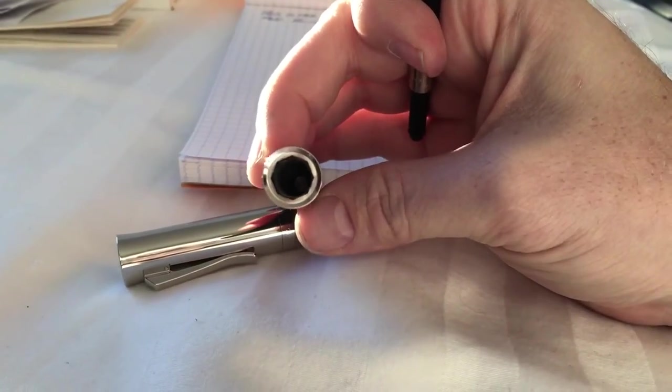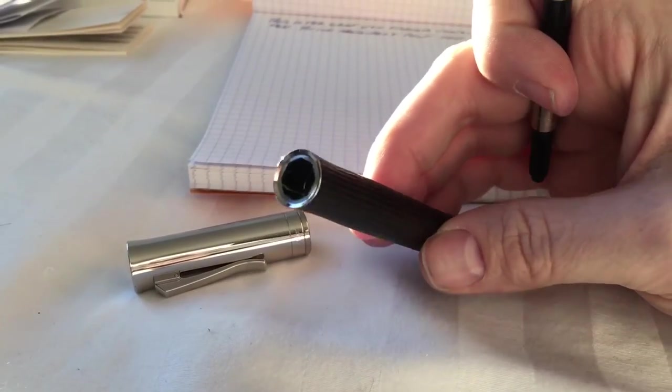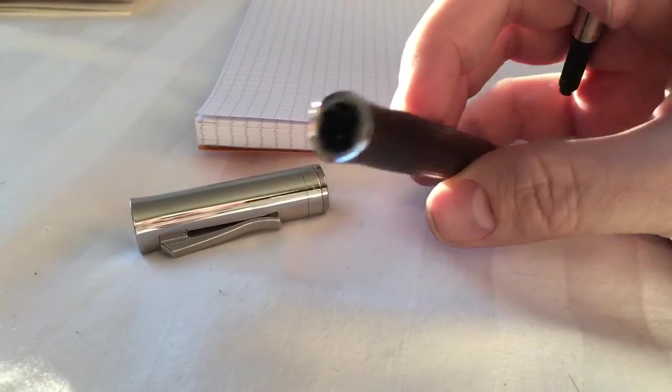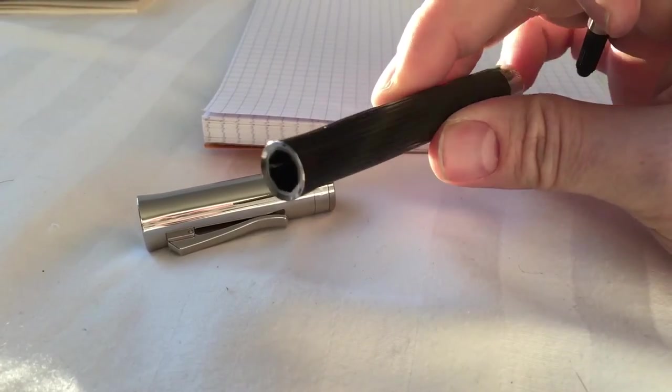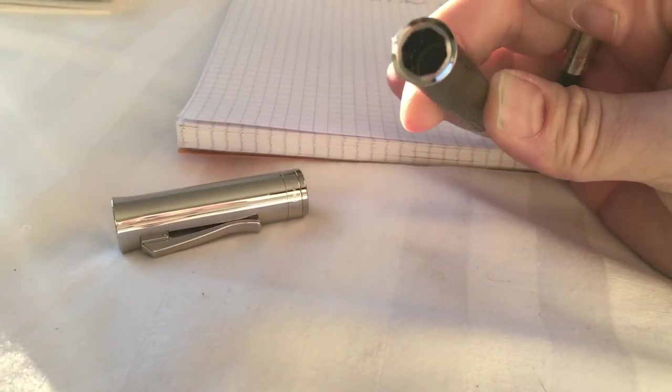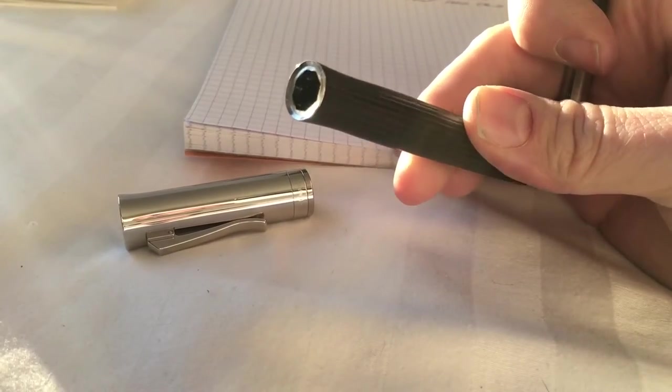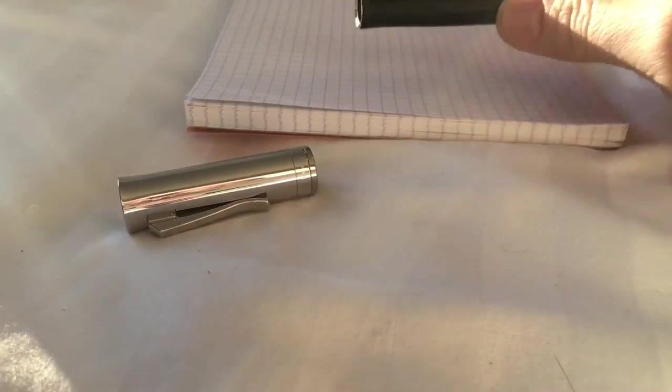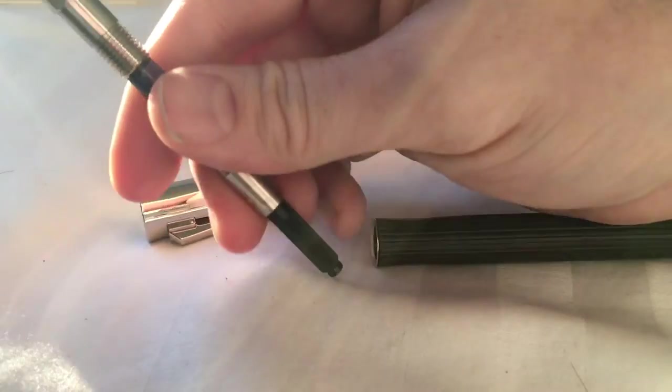...is actually lined on the inside. It's got this wood outside, and then on the inside it's got like a metal tube in there. You can see where the ribs are that would capture the pen as you stick it back in.